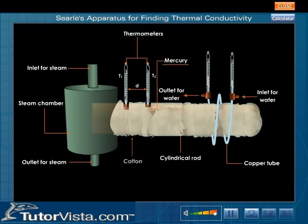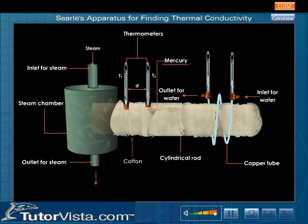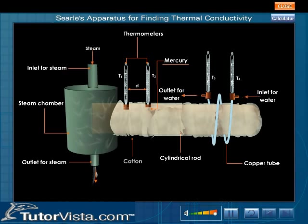To determine the coefficient of thermal conductivity using this apparatus, pass steam through one end and water through the coiled copper tube. Record the temperatures of the incoming and outgoing water using thermometers T3 and T4.